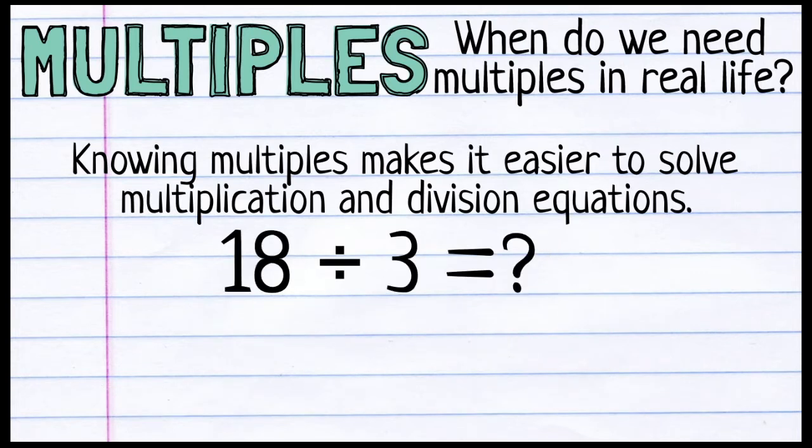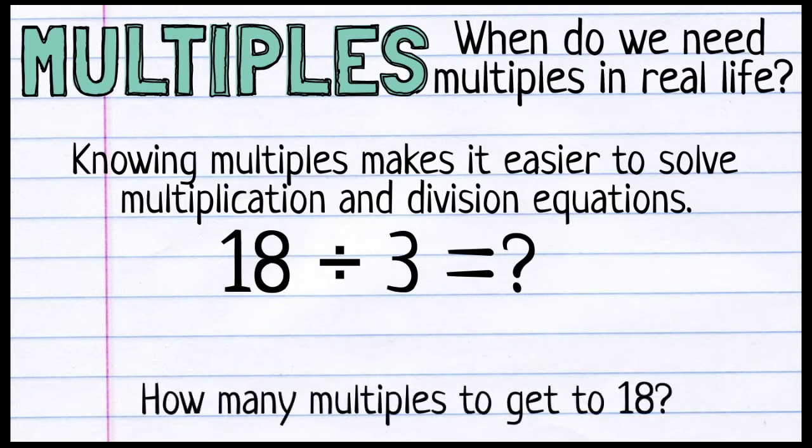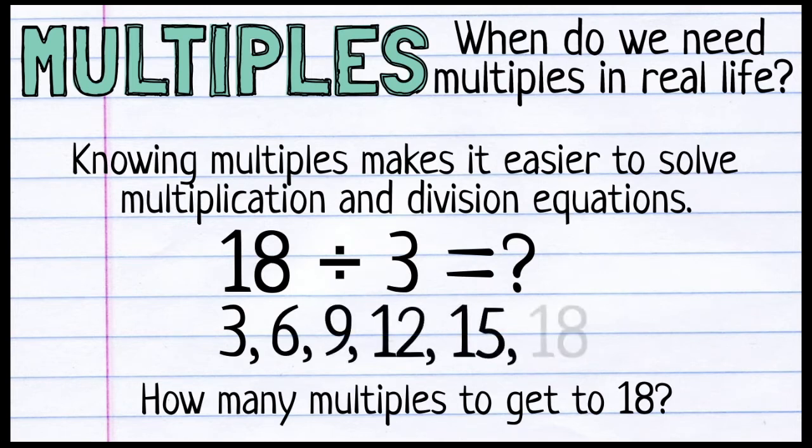This also works with division equations like 18 divided by 3. This time, I'm listing multiples of 3 and I'm trying to figure out when I hit 18, what multiple is that? What number multiple on my list? Like this. 3. That's the first multiple. So that's 1, 2, 3, 4, 5, 6. Oh look, there's 18. 18 is the sixth multiple on my list of multiples of 3. So 18 divided by 3 is 6.